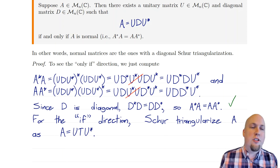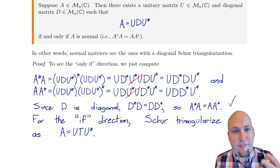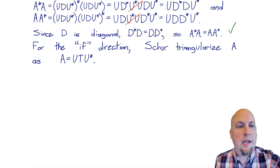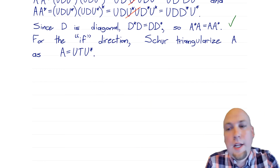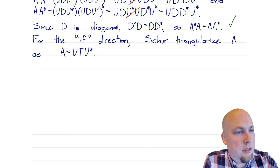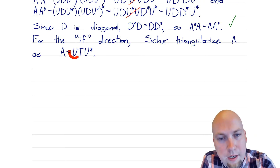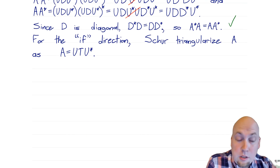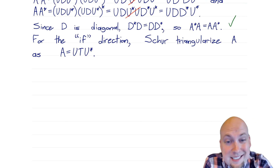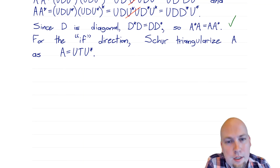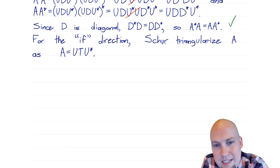For the if direction, we go the other way — we need to show that if A is normal, then we can decompose it as U D U*. So let's assume A is normal, and we're going to build on Schur triangularization, which works for every matrix. Schur triangularize A as A = U T U*, where U is unitary and T is upper triangular. Our goal is to show that T must actually be diagonal.